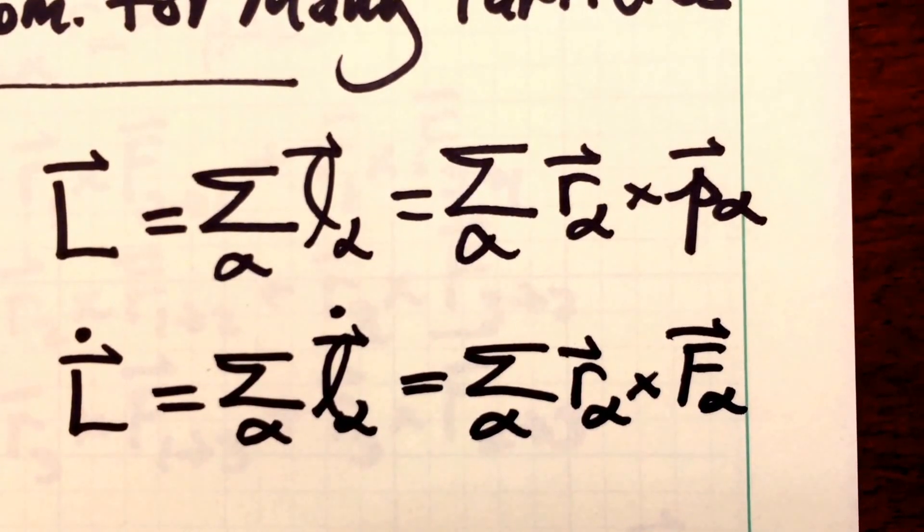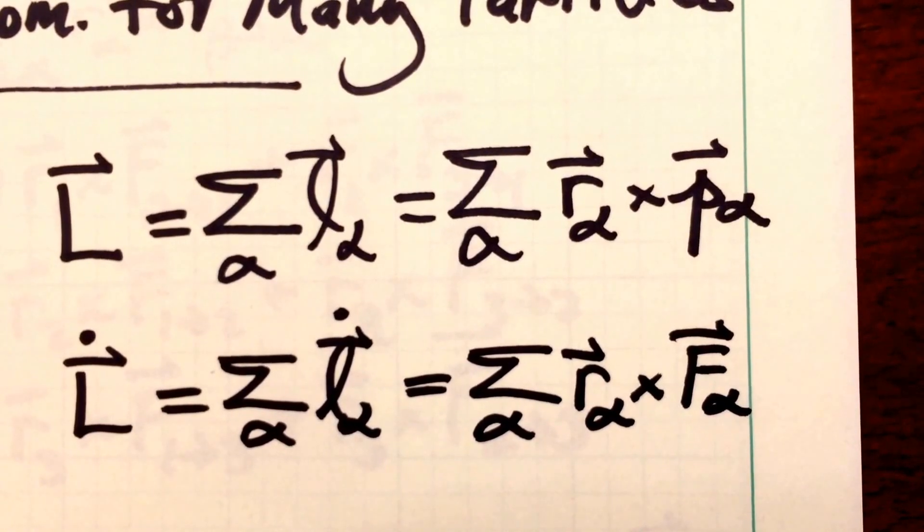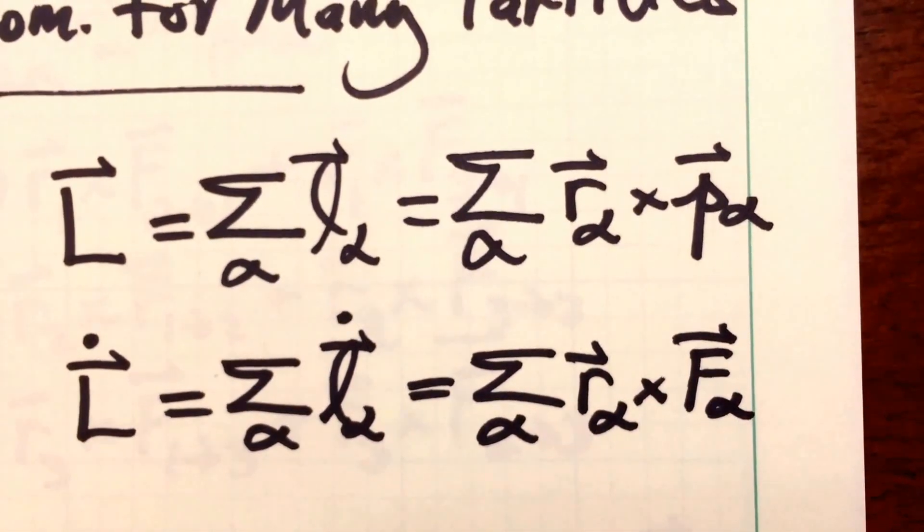And that is equal to the sum of r alpha vector crossed into the force vector on particle alpha, f vector alpha.